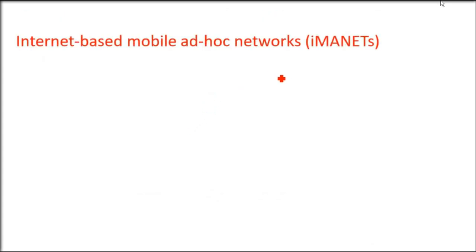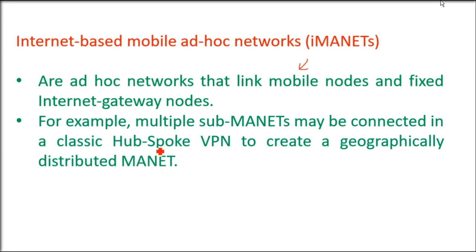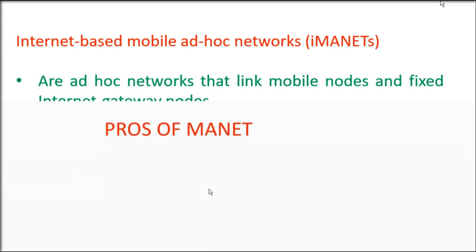iMANETs — Internet-based Mobile Ad Hoc Networks — are a link of mobile nodes and fixed internet gateway nodes. For instance, we can have multiple sub-MANETs connected in a classic hub-and-spoke or VPN arrangement to create a geographically distributed MANET using iMANET.